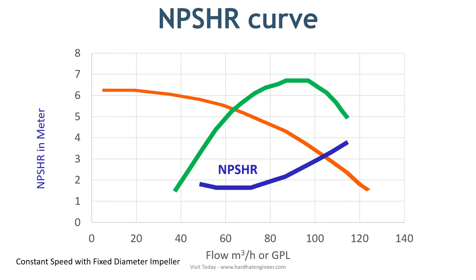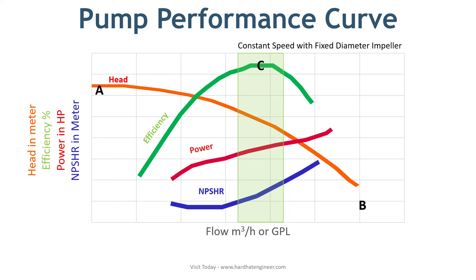Now let's put all four curves on a single chart to give you an overall pump performance review. You can see how these curves interact with each other. As noted earlier, all these curves are drawn for a constant speed, fixed diameter impeller. If you change any of these parameters, all the curve values will change.